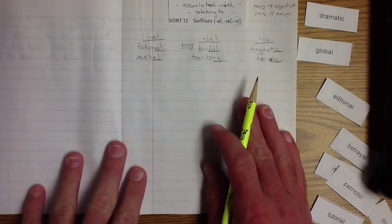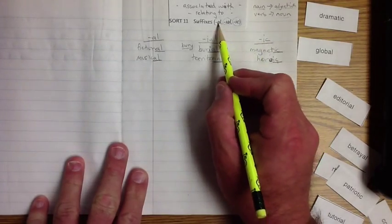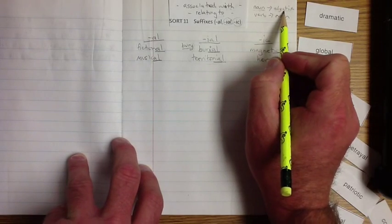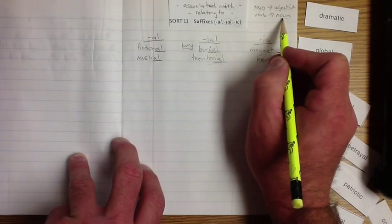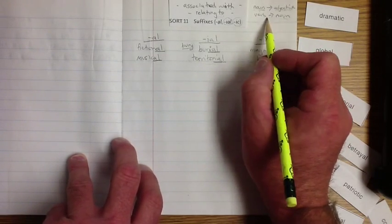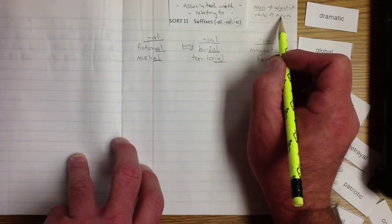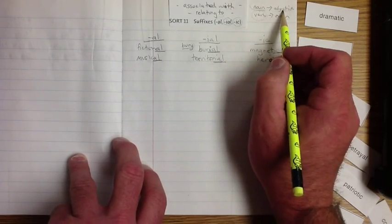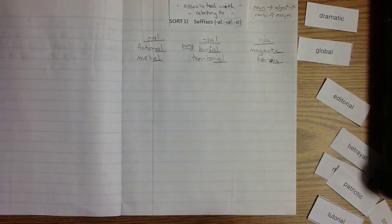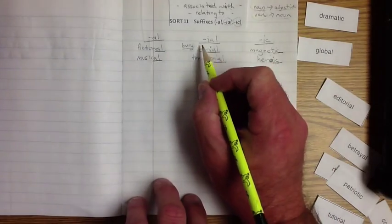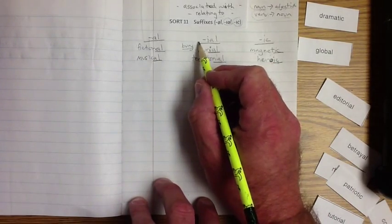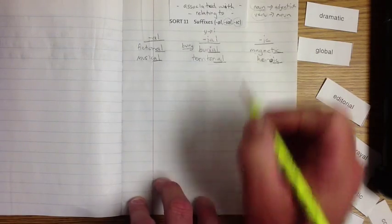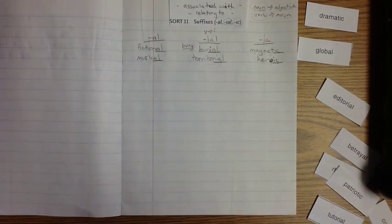I hope you understand what we're talking about here when it's the -al, -ial, and -ic, with the nouns going to the adjectives, the verbs going to nouns. If it's a verb, it will change to a noun with one of these. The nouns will change to an adjective. Remember also that we've got Ys in here that will go Y to an I.